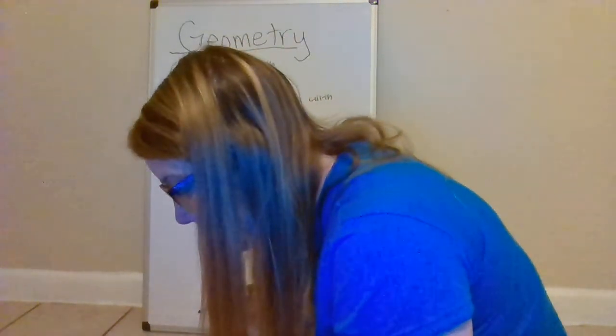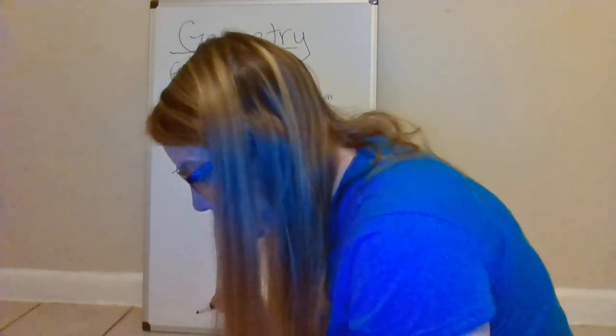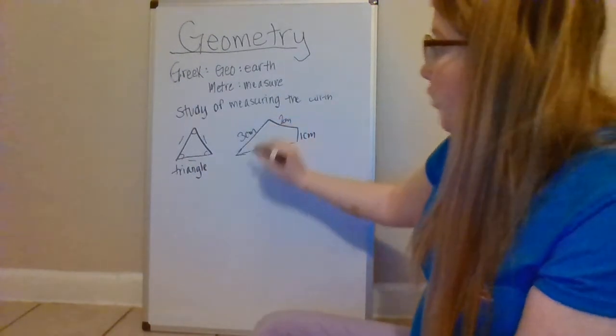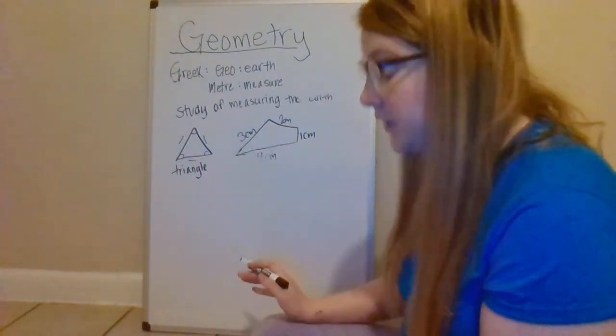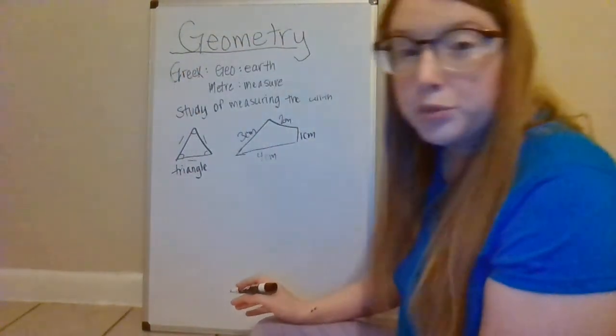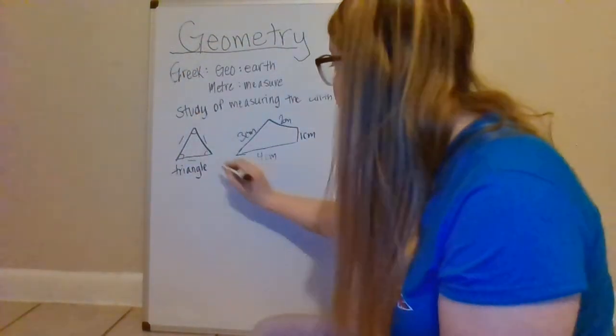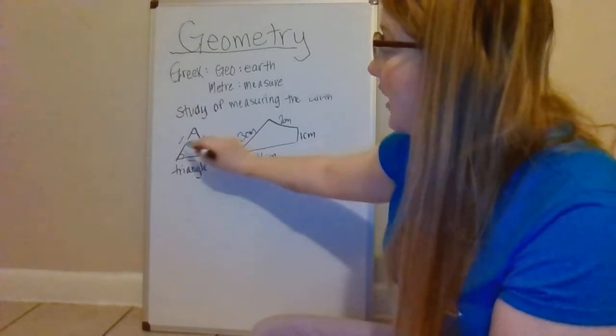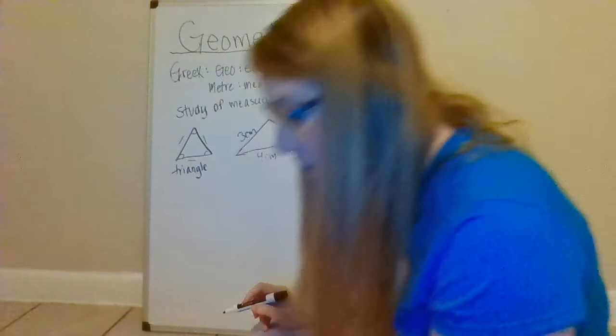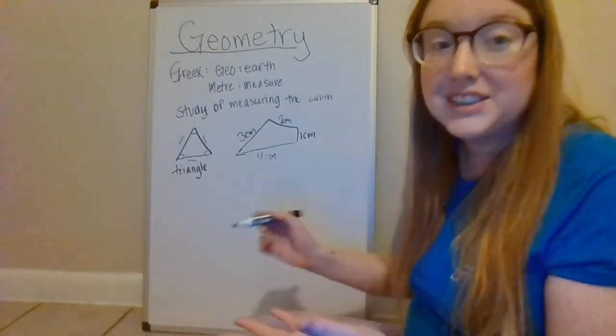This shape, we could measure the size of the shape with a ruler and figure out what it was, but sometimes we have shapes that can just be different sizes. Some shapes have two or more sides that are the same length. Like for example, this triangle has two sides that are the same length and then one side that is a little bit smaller.